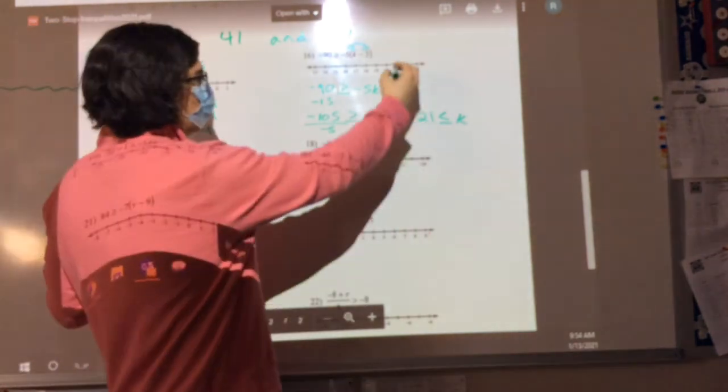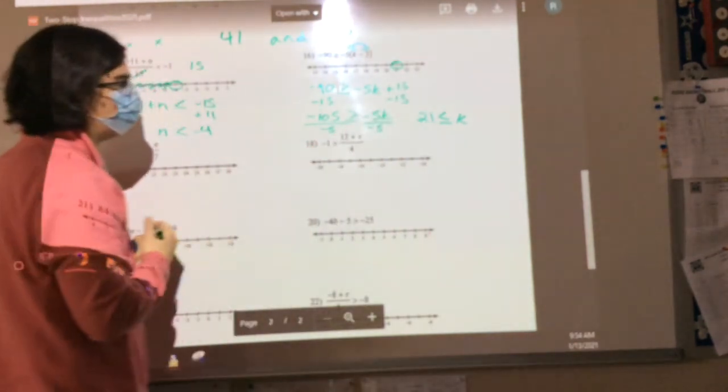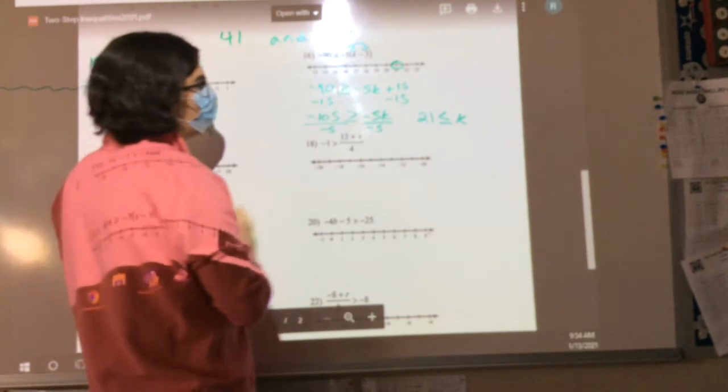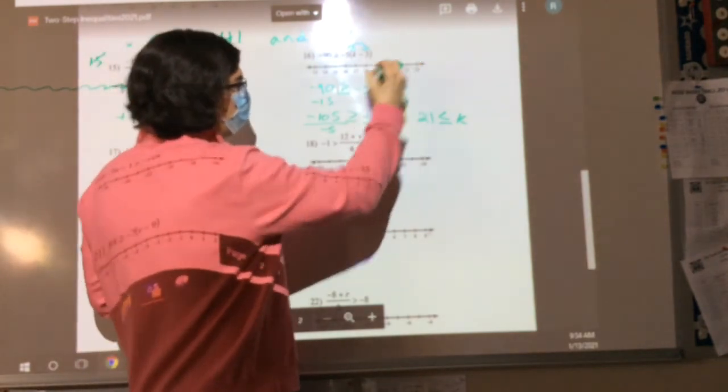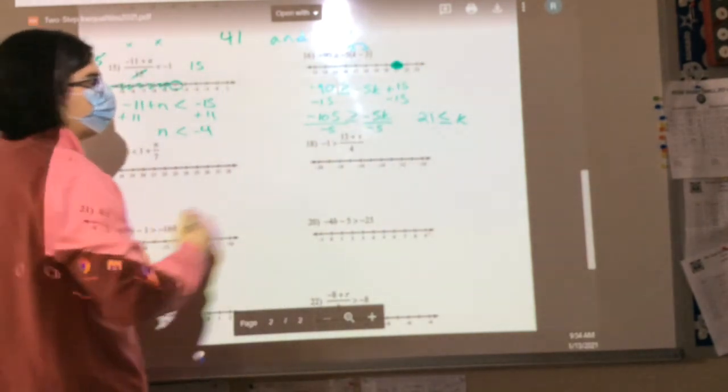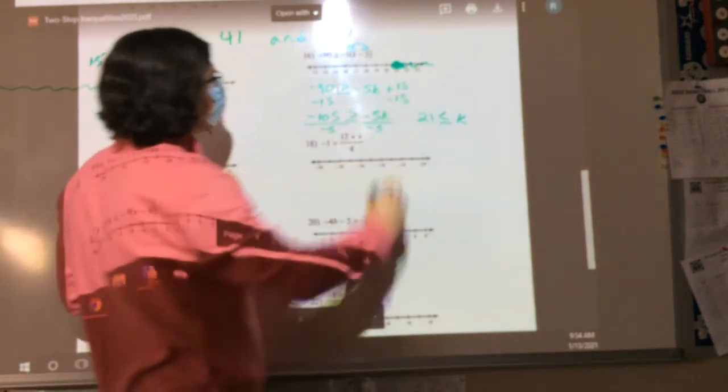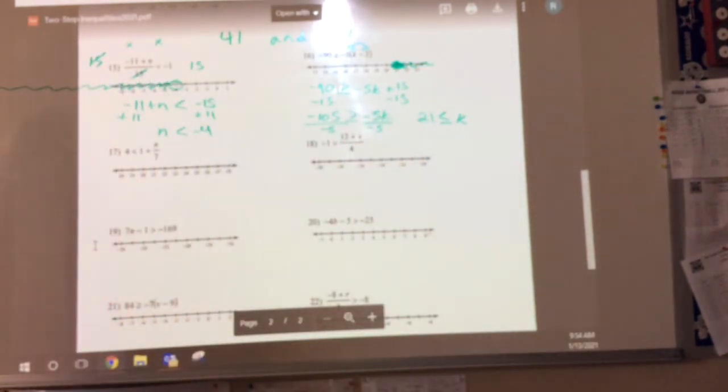So then I'm going to find my 21. Is it open or closed circle? Closed. Closed circle. Am I going to go to the left or the right? The right. Let me ask you this. Does 41 fall into that category? Does 77 fall into that category? Okay. That's what we're trying to accomplish today.